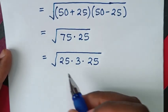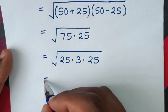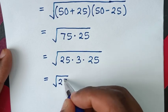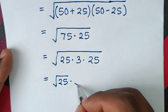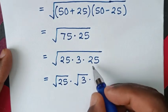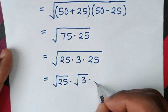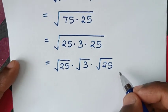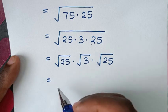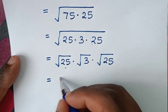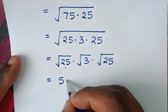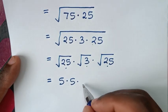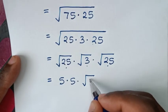So we apply this and it will be equal to the square root of 25 times the square root of 3 times the square root of 25. That gives us 5 times square root of 3 times 5.